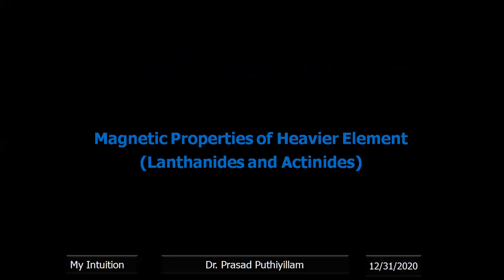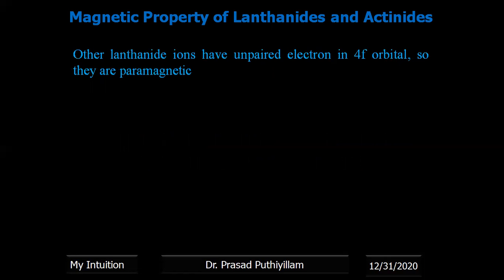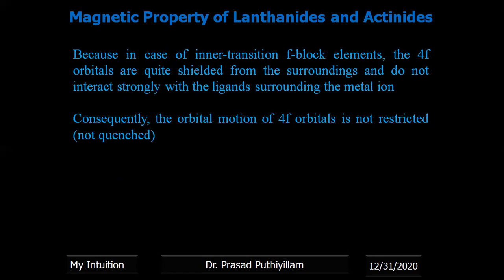The third important topic is the magnetic behavior of heavier elements — lanthanides and actinides. For some ions like La³⁺, Ce⁴⁺, Yb²⁺, and Lu³⁺, the electronic arrangement is either fully filled or has no electrons, meaning they have no unpaired electrons and are therefore diamagnetic. Most other lanthanide ions have unpaired electrons in the 4f orbitals. For d-block elements, we calculate the spin-only magnetic moment using the expression √(n(n+2)), but for lanthanides, we cannot use spin-only magnetic moment alone — the orbital magnetic moment must also be considered.